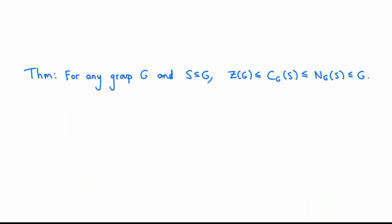The main theorem I want to prove in this video is that for any group G and any subset S of G, the center of G is always a subgroup of the centralizer of S in G, which is always a subgroup of the normalizer of S in G, which is always a subgroup of G. We've already proved that as sets each one is contained in the set to the right of it, so the only thing we really need to prove is that the center, the centralizer, and the normalizer are all subgroups of G.